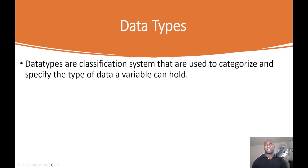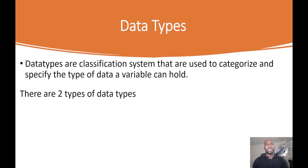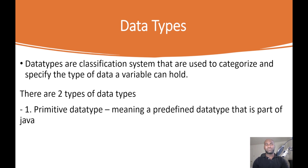Data types are a classification system that we can use to specify and categorize the type of data our variables can hold. There are basically two types of data types: we have the primitive data types, which are predefined data types that are part of the Java language, and we also have the user-defined data types — any data types the programmer defines for a variable that would hold data.